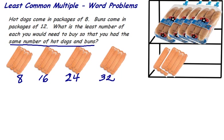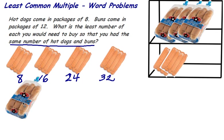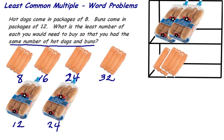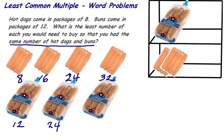So what about the buns to go with them? If I buy 1 pack of buns, then I have 12 hot dog buns. If I buy 2 packs, now I can have 24 buns. If I buy 3 packs, then I have 36 buns. So again, I can't buy 10 or 20 or 30 buns. I have to buy 12, 24, or 36.